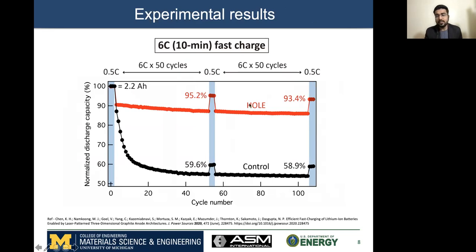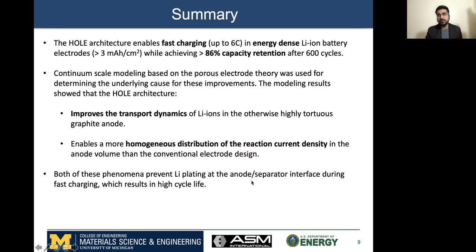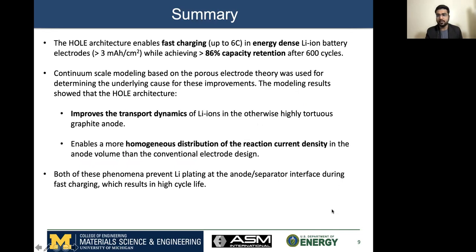What you can see is that at 6C charging, which is 10 minutes charging, the hole cell is able to retain its capacity in a much better way than the control cell. With this, I would like to summarize my presentation. We showed how our hole architecture can enable us to achieve all three properties in industrially relevant pouch cells, which can be used for electric vehicle applications.